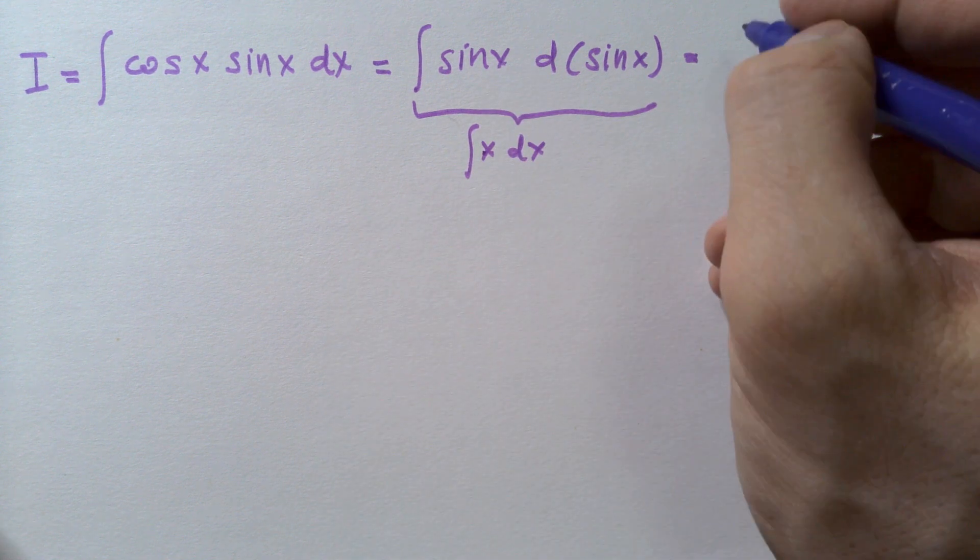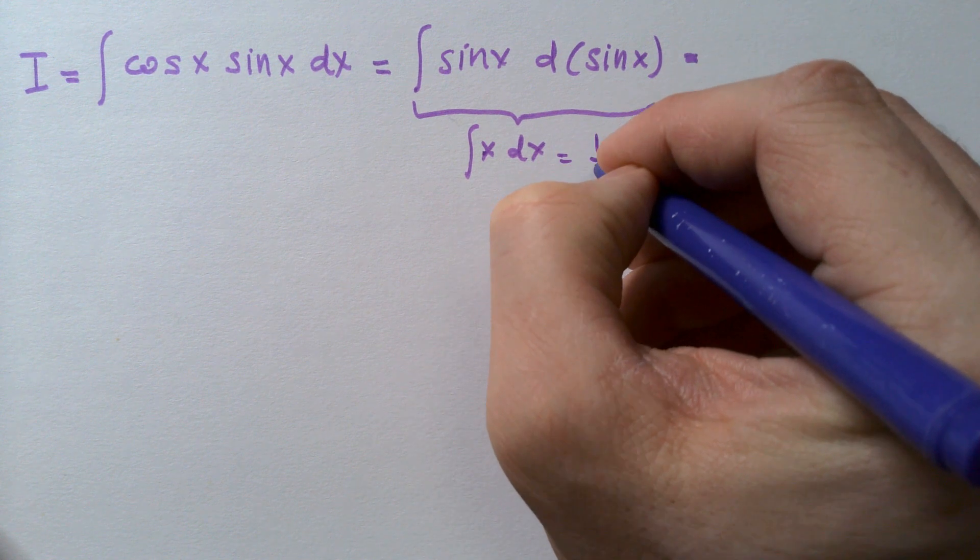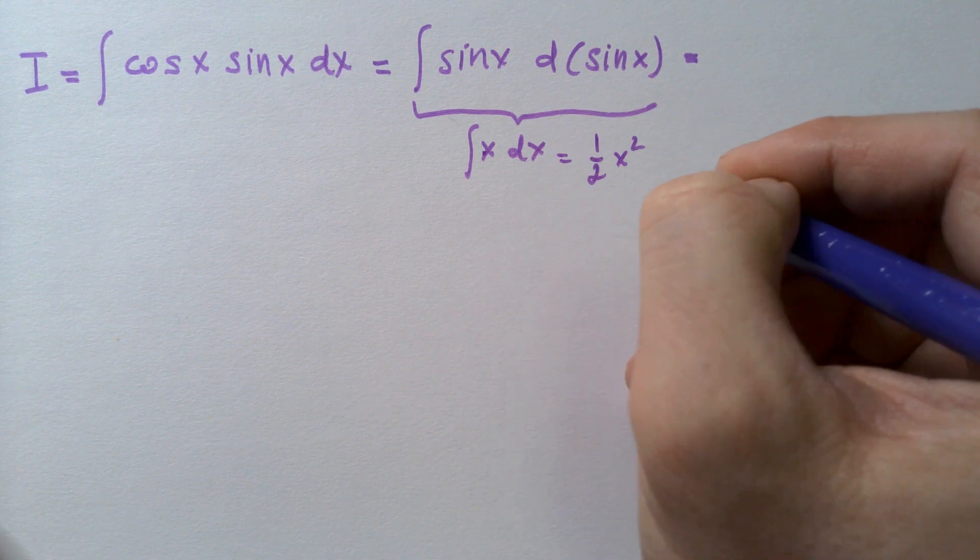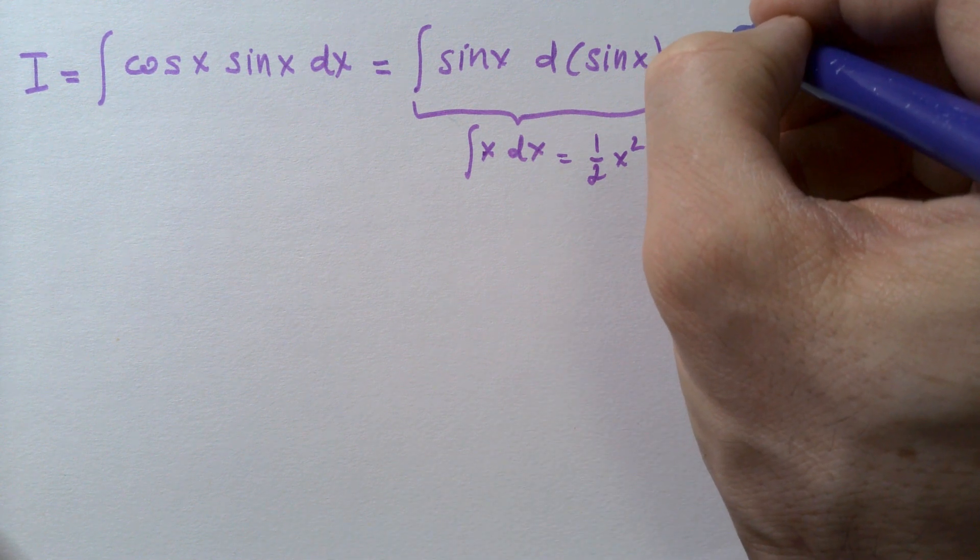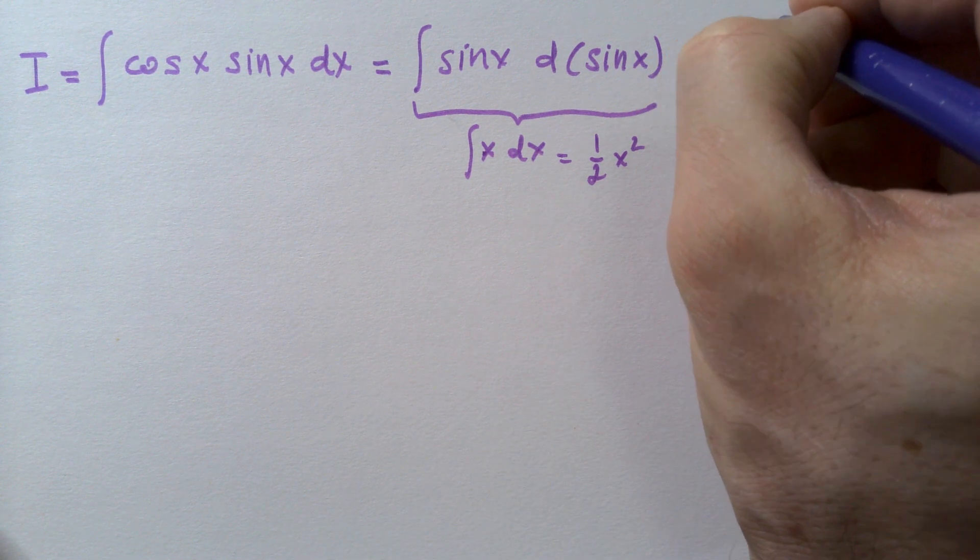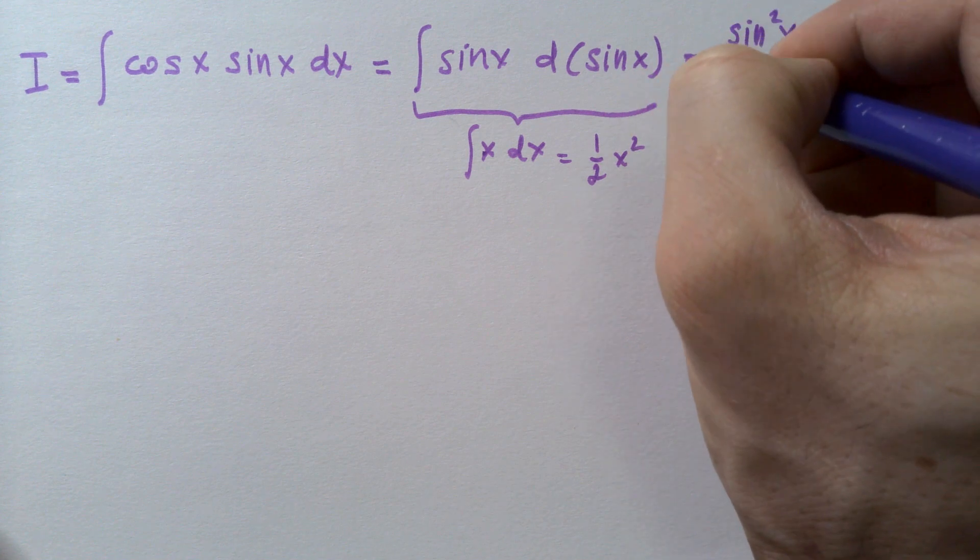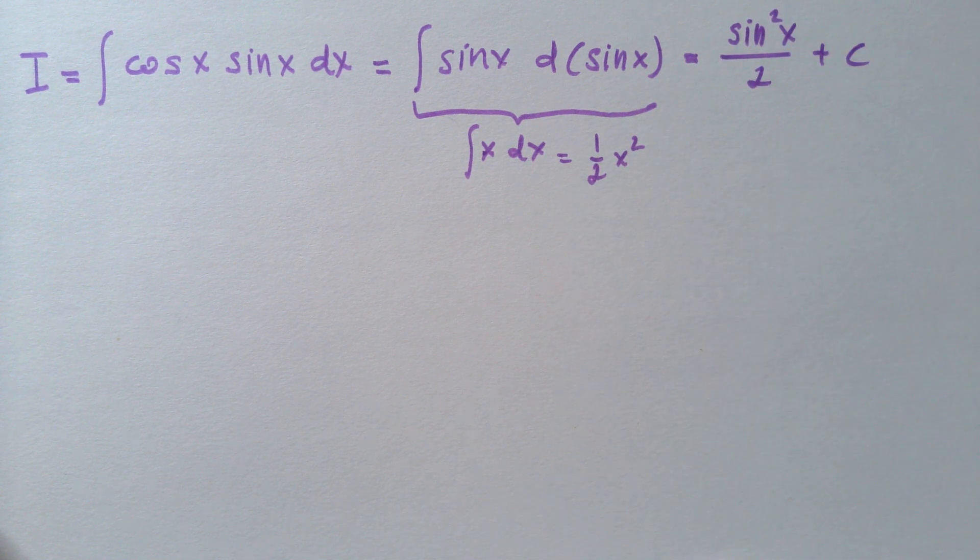And therefore this integral would be 1 over 2x squared plus integration constant, so this integral will be sine squared x over 2 plus some integration constant.